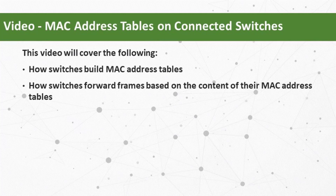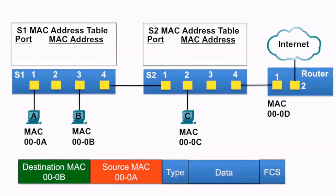In this video, PCA is going to send an Ethernet frame to PCB, and PCB is going to send an Ethernet frame to PCA. We're going to examine how switches S1 and S2 build their MAC address tables, and also how they forward frames based on the information in those MAC address tables.